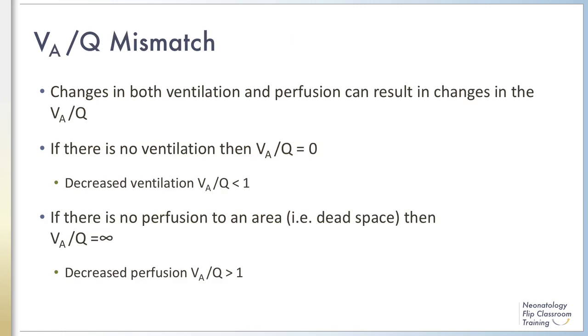Changes to either or both ventilation and perfusion can result in changes in the ventilation perfusion ratio, which is commonly described as V-Q mismatch. In situations where there is no ventilation, the ventilation perfusion ratio equals zero. If there is no perfusion to an area of the lung, then the ventilation perfusion ratio is equal to infinity. What is more commonly seen is situations of either decreased ventilation or perfusion to either areas of the lung or the entire lung, which results in ventilation perfusion ratios less than or greater than one. This can affect both oxygen and carbon dioxide content of the blood. We will discuss the effects of a V-Q mismatch in the next several slides.